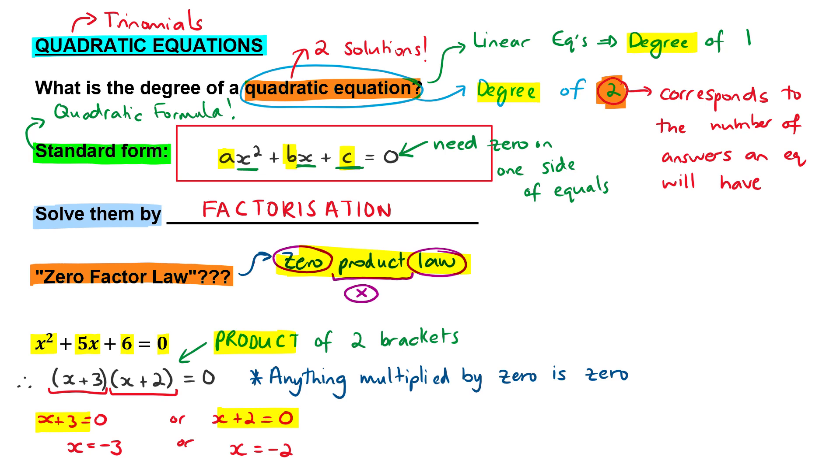And guys, if I then went and I substituted minus 2 into the x there and the x there, I would get zero. So the equation would work. Likewise, if I went and took the minus 3 over here, and I substituted into x there and x there, I would again get zero. And so that value works as well. Do you see? We have two solutions.